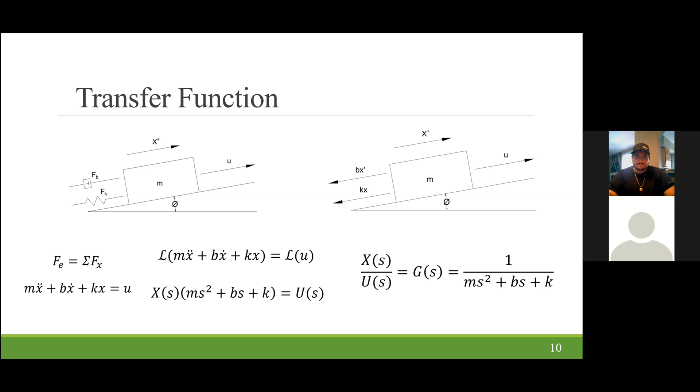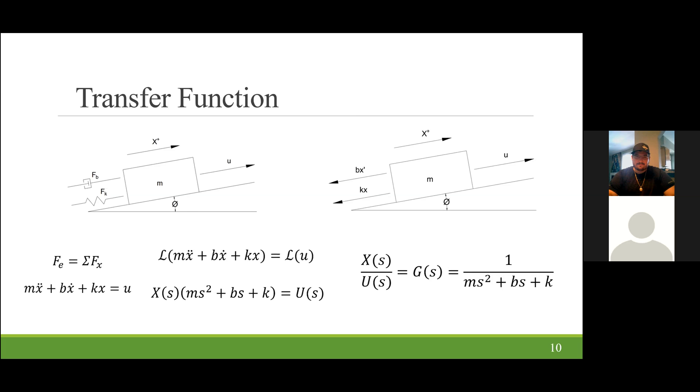With our transfer function, we can find out our state-space variables. So solving for the state-space variables, we achieve an A matrix of 0, 1, negative k over m, negative b over m, a B matrix of 0 over 1 over m, a C matrix of 1, 0, and a D matrix of 0.